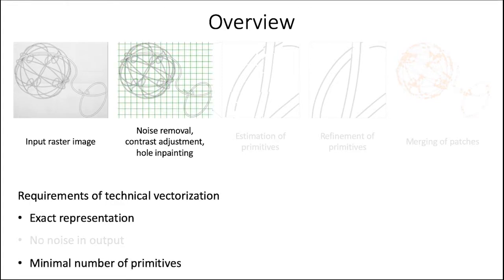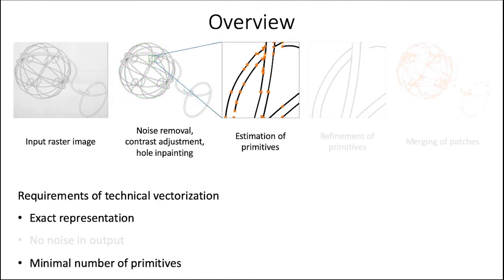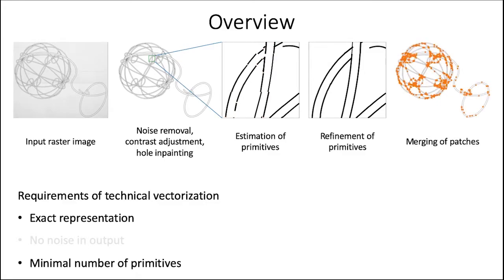Then, we split the image into small patches, and for each patch estimate the vector primitives. Here again, we use the data-driven approach to get the accurate vectorization with the optimal number of primitives automatically. After that, to maximize the accuracy of vectorization, we further refine the primitives aligning them to the input raster. Finally, we merge the primitives from all patches into a single image.